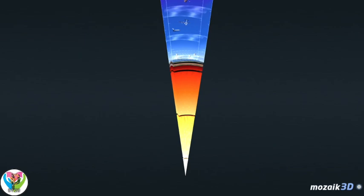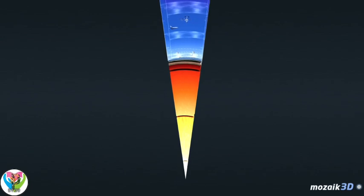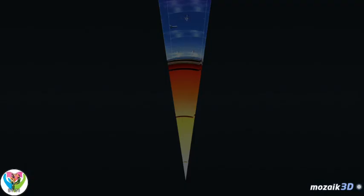Geospheres are grouped into outer and inner layers. The outer layers are the atmosphere, the biosphere, and the hydrosphere. The inner layers are the crust, the mantle, and the core.